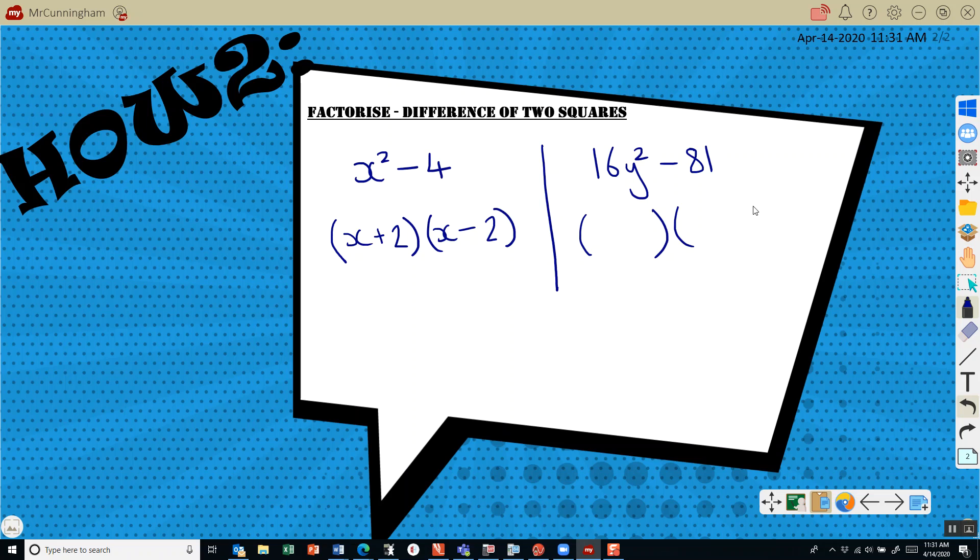So put down my two brackets. What two things multiply together to give 16y squared? Well, 4 times 4 is 16, y times y is y squared. What two things multiply together to give 81 that are the same? 9 times 9. Put down a positive and a minus.